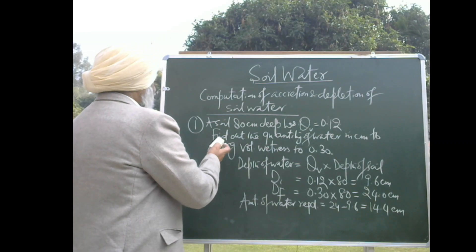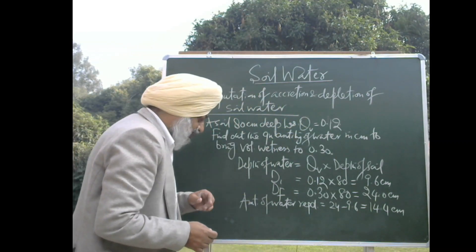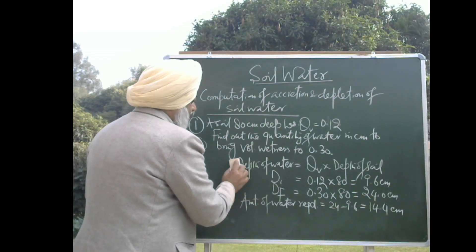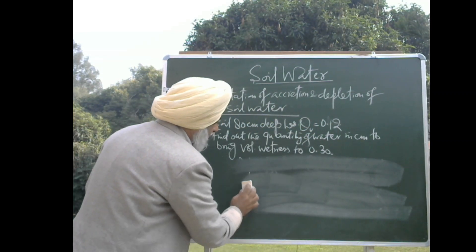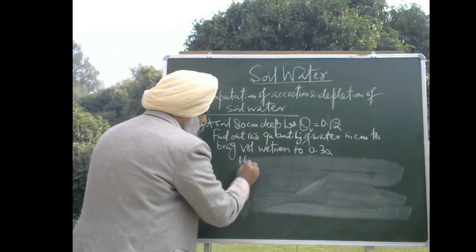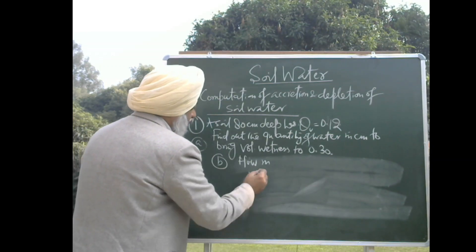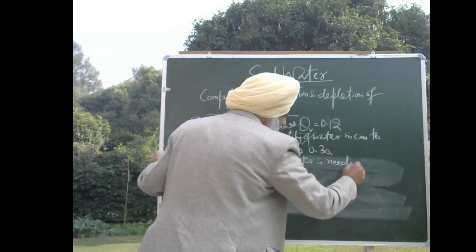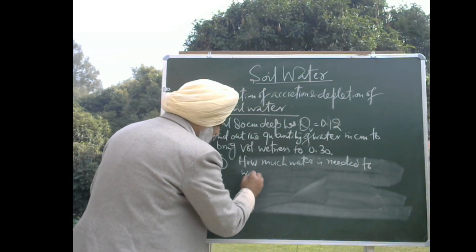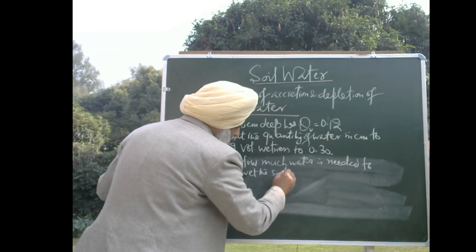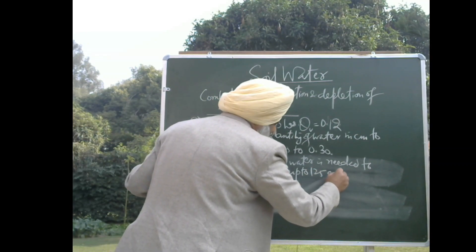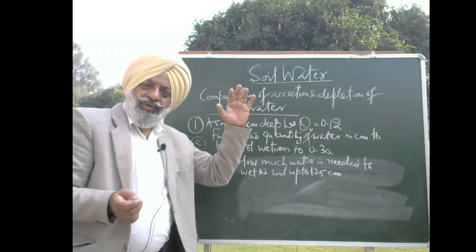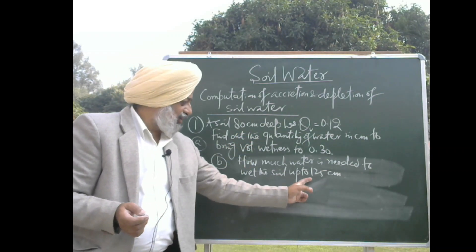Now another example — case B. How much water is needed to wet the soil up to 125 centimeters? This is very important. Initially the profile depth is 80 centimeters; now we want to wet it up to a depth of 125 centimeters. Using the same formula: depth of water equals volumetric water content multiplied by depth of soil.